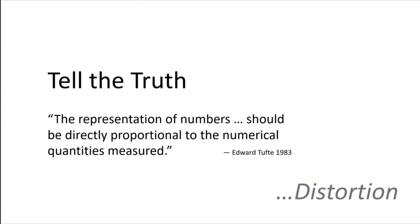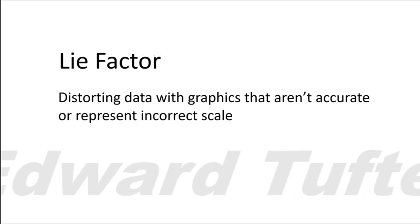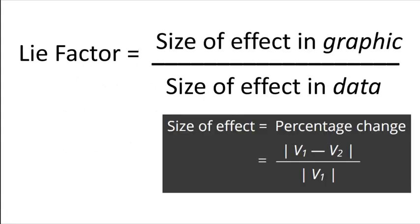Above all else, the representation of numbers should be directly proportional to the numerical quantities measured. This is the idea of lying by distortion. Tufte coined the phrase the lie factor — the idea of distorting data with graphics that aren't accurate or represent scale incorrectly. It's the size of the effect in the graphic relative to the proportional change in the data. I don't expect you to calculate lie factors for every graph, but seeing it written out helps understand the concept.